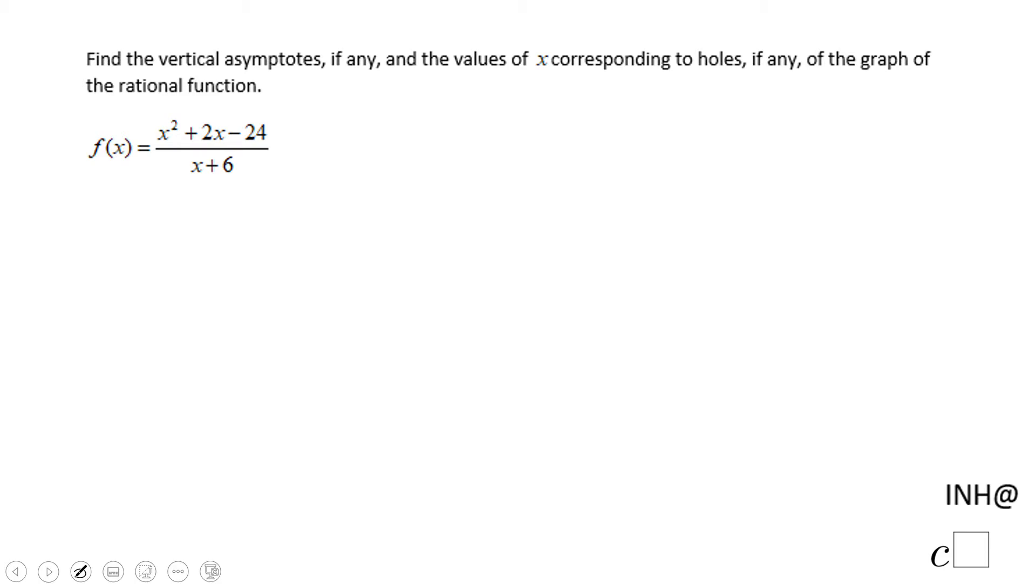Welcome back to iNeedHelp@CSquared. In this example, we have a rational function f of x, and we need to find the vertical asymptotes, if any, or the hole, if any.